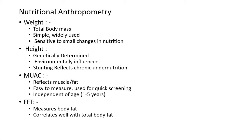The main anthropometric measurements taken are weight, height, MUAC, and FFT. Weight is the total body mass — simple, widely used, and sensitive to small changes in nutrition. Height is genetically determined and environmentally influenced; stunting reflects chronic undernutrition. MUAC — mid upper arm circumference — reflects muscle and fat, is easy to measure, used for quick screening, and is independent of age, typically used for ages 1 to 5 years. FFT means fat fold thickness; it measures body fat and correlates well with total body fat.